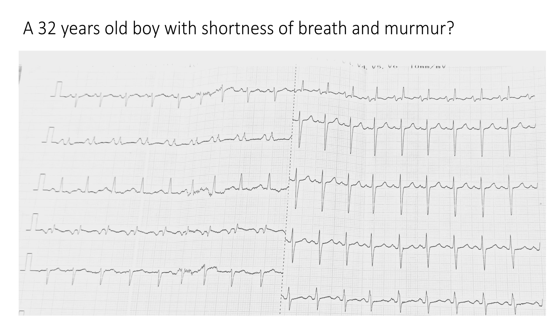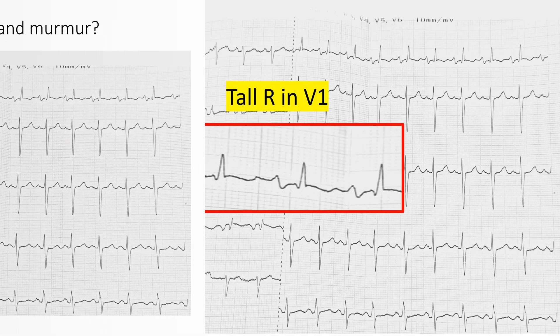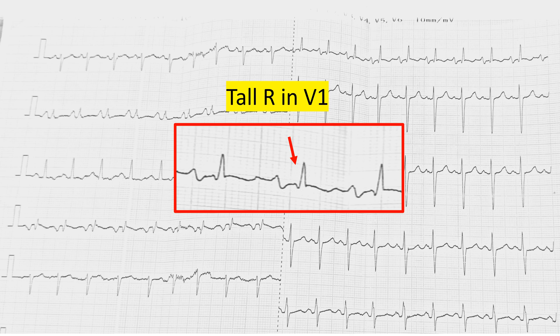Starting with the most obvious finding: in the chest leads V1 and V2, there is a tall R wave in V1. Usually the R wave is not that tall in V1. There are some causes, both physiological and pathological, so we need to look at other findings to determine if this is a pathology.